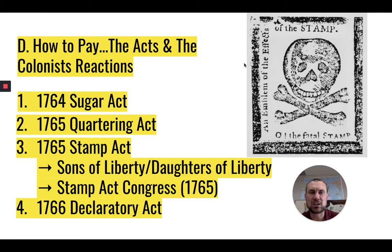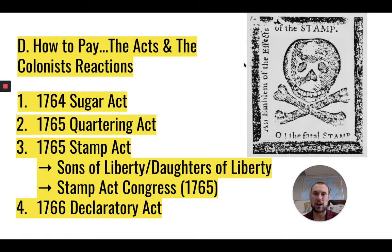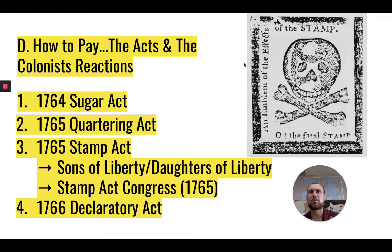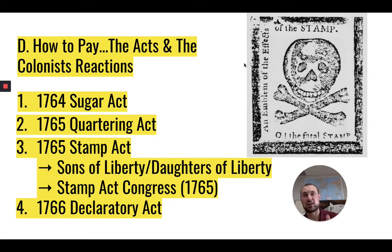And so we start seeing these acts. You need to understand it this way: there's going to be an act, and then there's going to be a reaction by the colonists — all based on this idea of actual versus virtual representation. It's going to start with the Sugar Act, which really didn't affect everyone, so we don't talk about it much besides it being the first. It really just affected the wealthy, which was a small percentage. The Quartering Act will become more important as the years go by, as British soldiers try to enforce these acts more and more, and the colonists resented it so much they put it in our Bill of Rights with the Constitution.